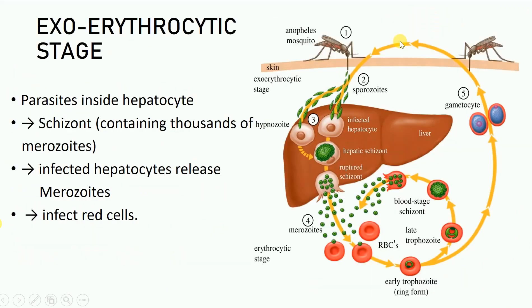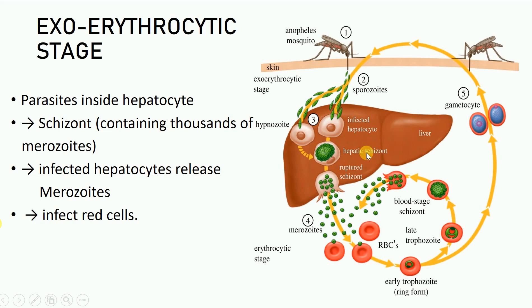Once the sporozoites have reached inside the human being, they make their way into the liver and infect the hepatocytes, also known as the liver cells. After infecting the hepatocyte, they reproduce asexually by schizogony and result in the formation of a schizont which has thousands of merozoites. Once this schizont ruptures, these merozoites are released into the blood of the individual.